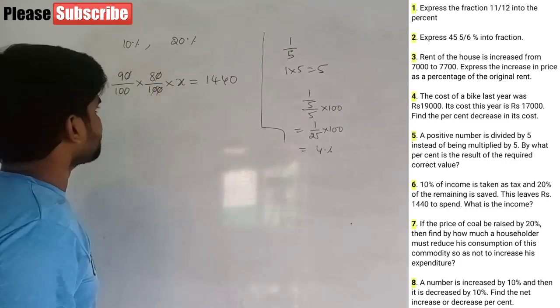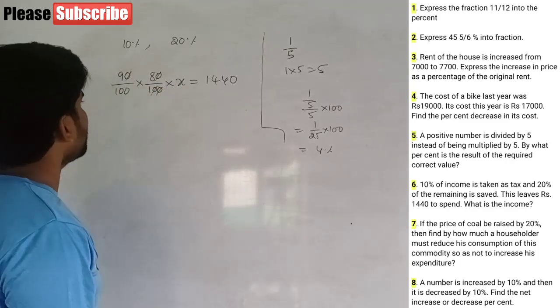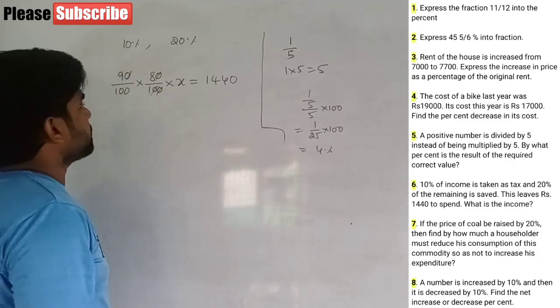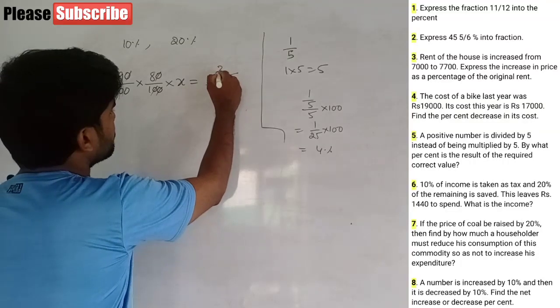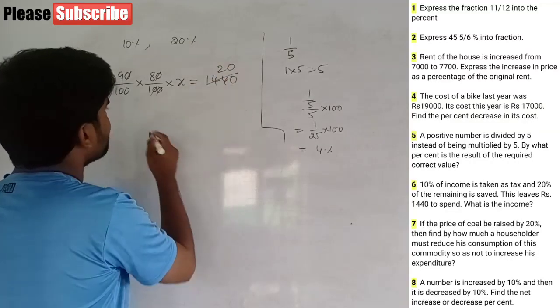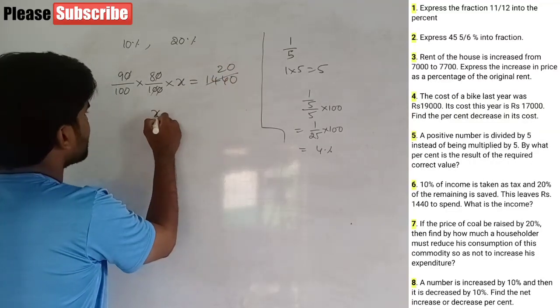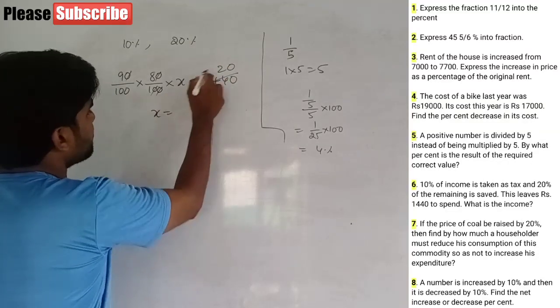Continuing the solution: 9 into 8 is 72. After canceling 20 times, x equals 1850 per day — approximately 2000. So the income is calculated from these steps.